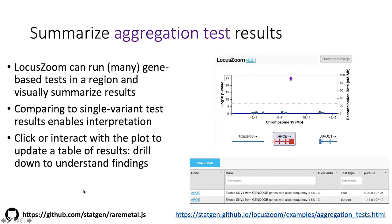The other thing we were working on recently was aggregation tests. These are tests where you have a number of rare variants that you're not powered to detect association for individually, and you want to group them together to test them. Similarly to credible sets, we developed a library that can calculate these aggregation tests — like burden and SKAT — from summary statistics. This library can be used in LocusZoom to display the results, and it can also be used in other places, including the portal.